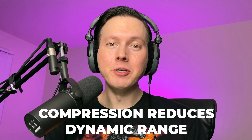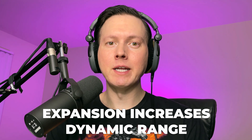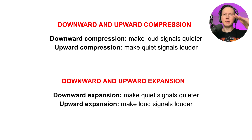With compression, you reduce the dynamic range so you have a smaller dynamic range. With expansion, you increase the dynamic range so you have a larger dynamic range — they are essentially the opposite of each other. When we think about compression, a lot of times we are thinking about downward compression, because downward compression makes loud signals quieter. Any signal that goes above a threshold is reduced to below that threshold according to whatever the ratio is.